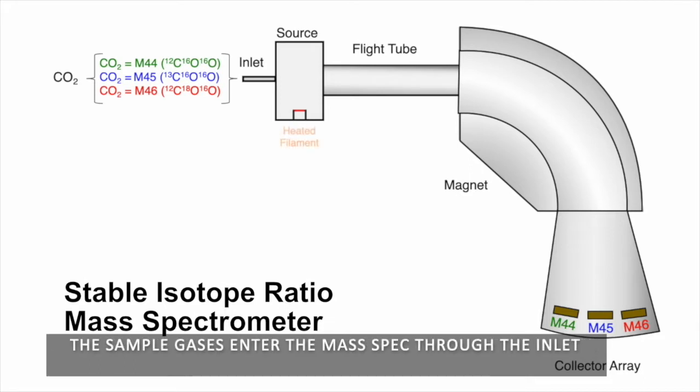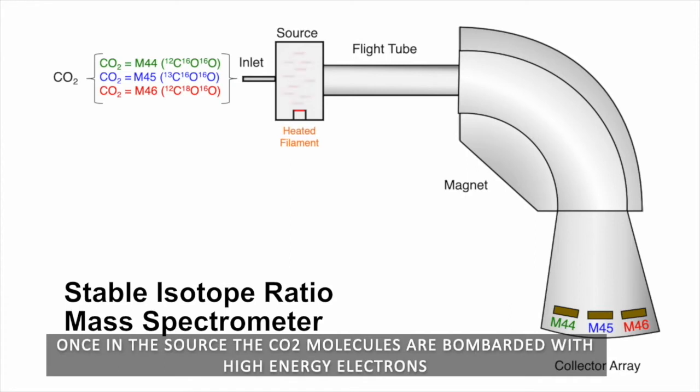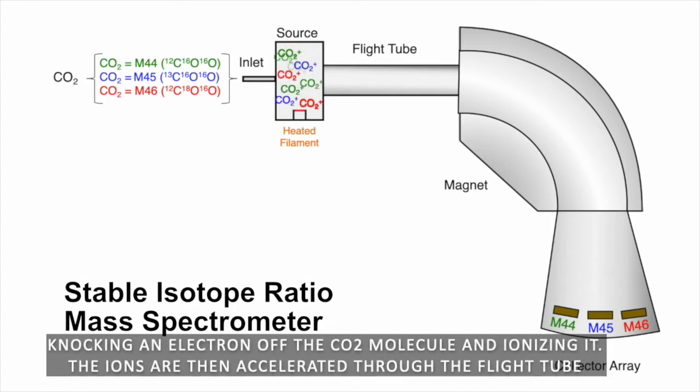The sample gases enter the mass spec through the inlet. Once in the source, the CO2 molecules are bombarded with high energy electrons, knocking an electron off the CO2 molecule and ionizing it.